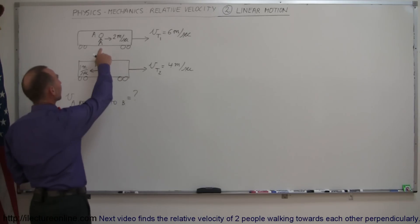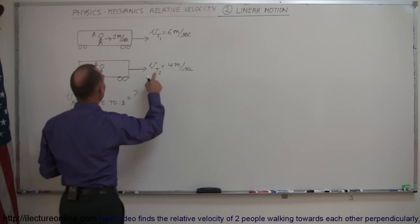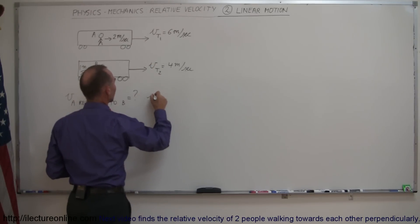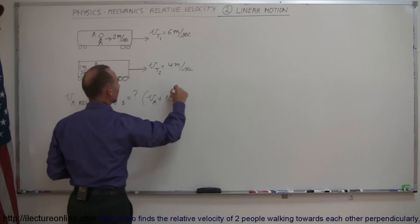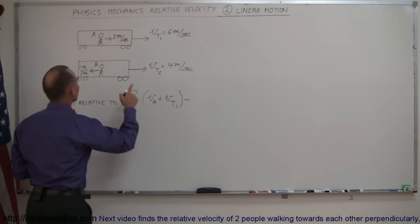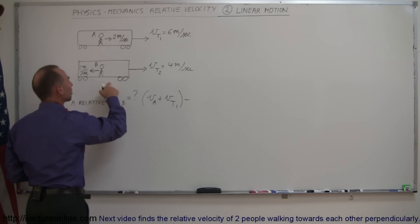Well, we take the velocity of A and add that to the velocity of the train. So we have velocity of A plus the velocity of train 1, and we subtract from that the velocity of B and the velocity of train 2.